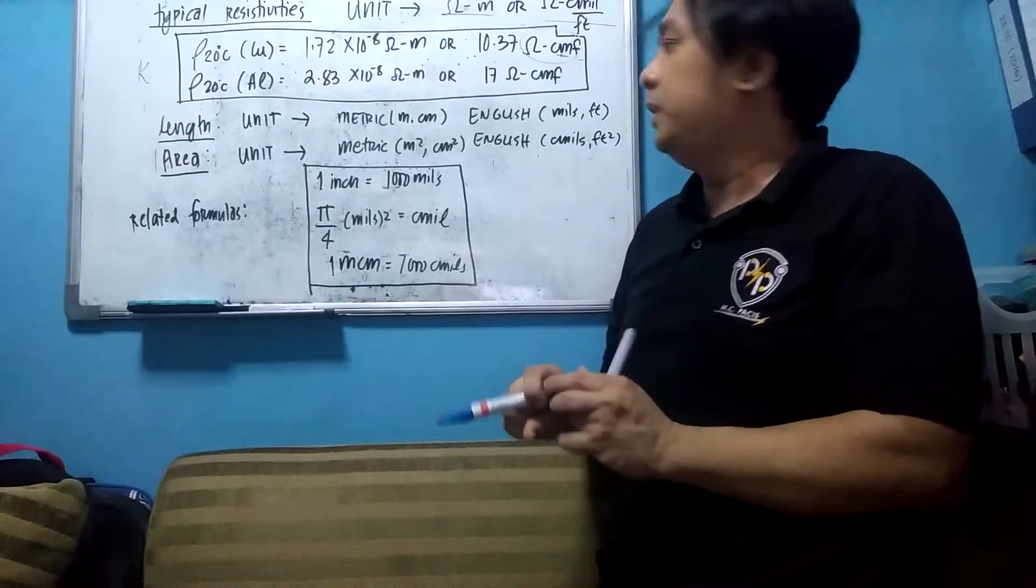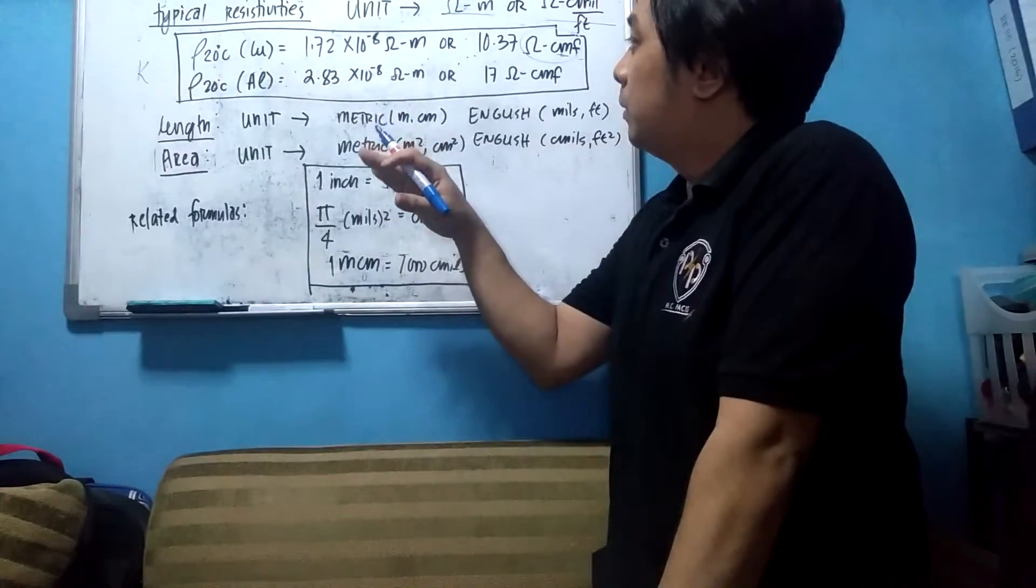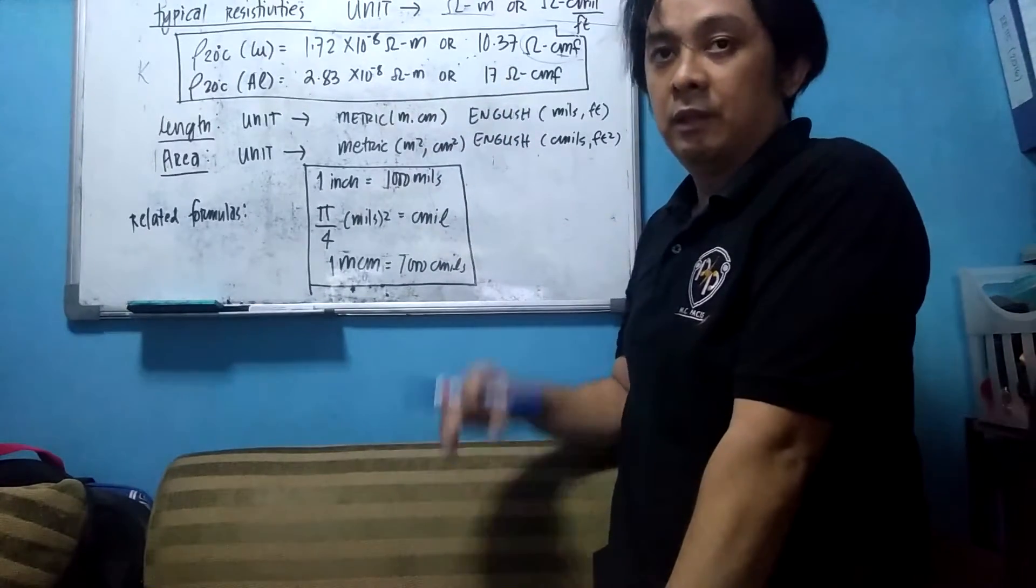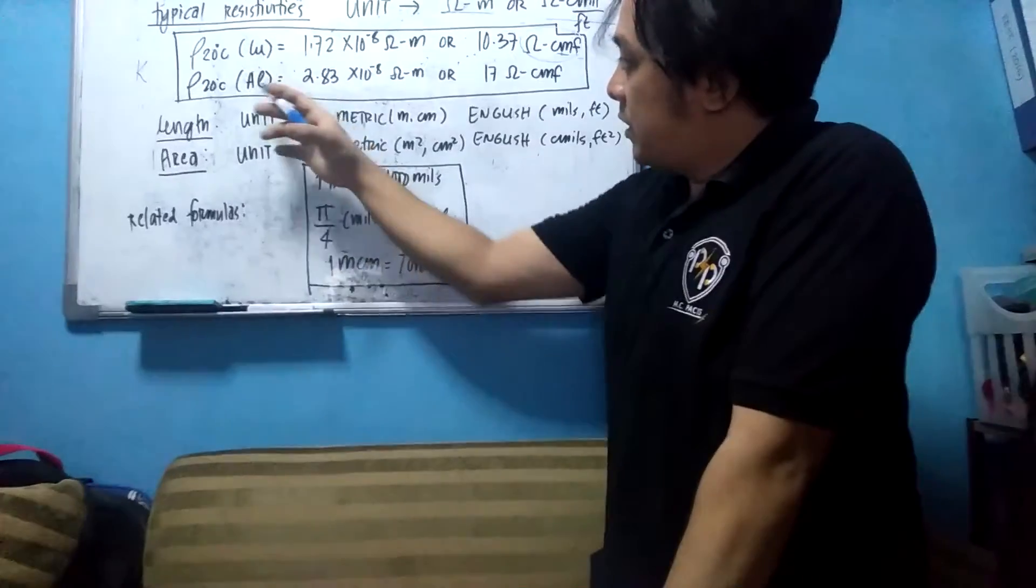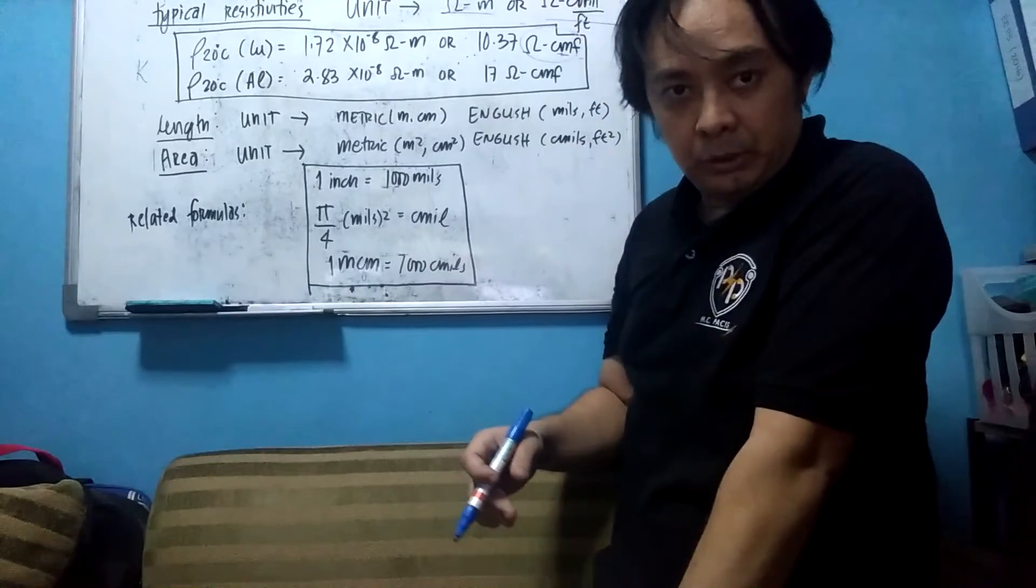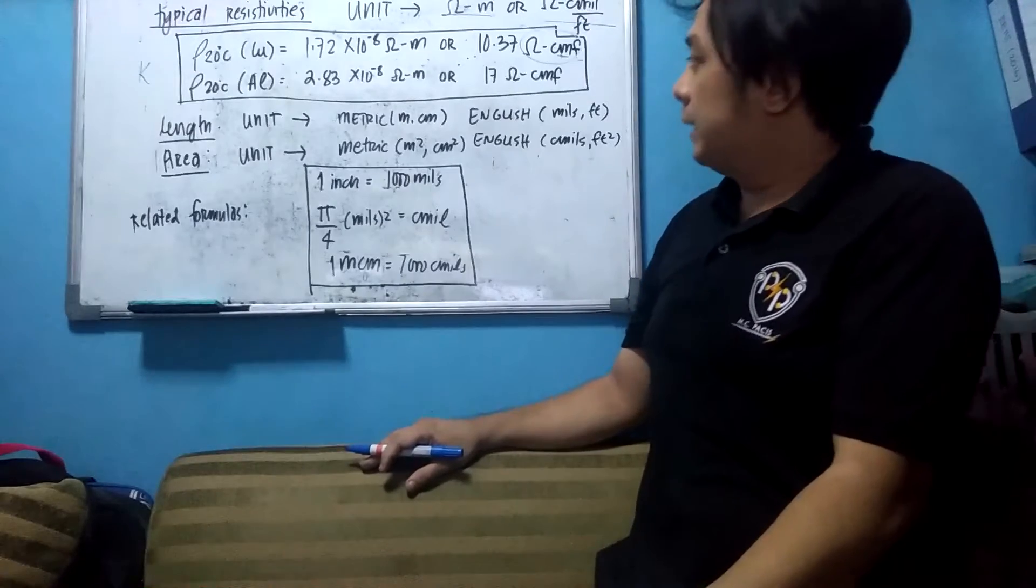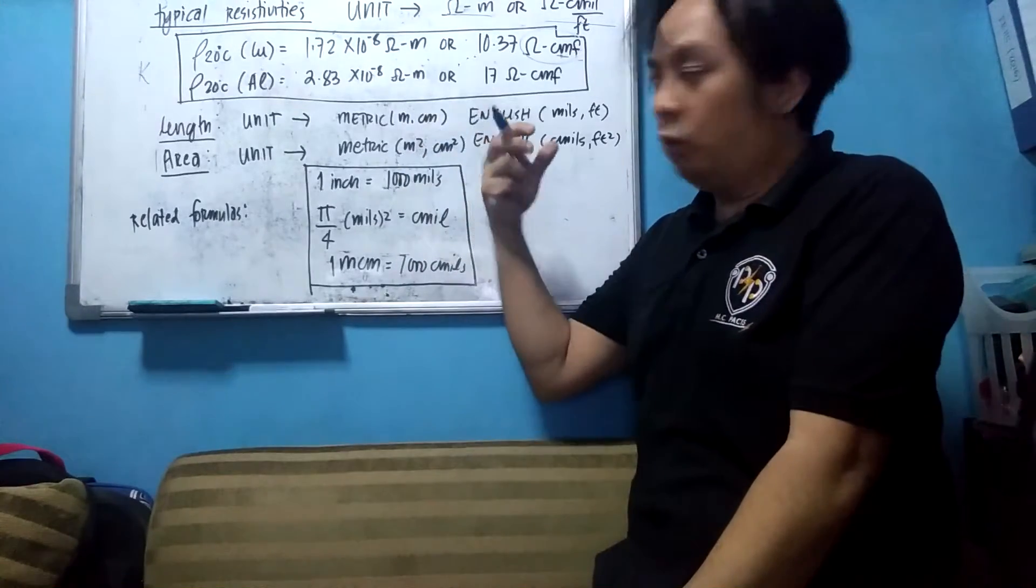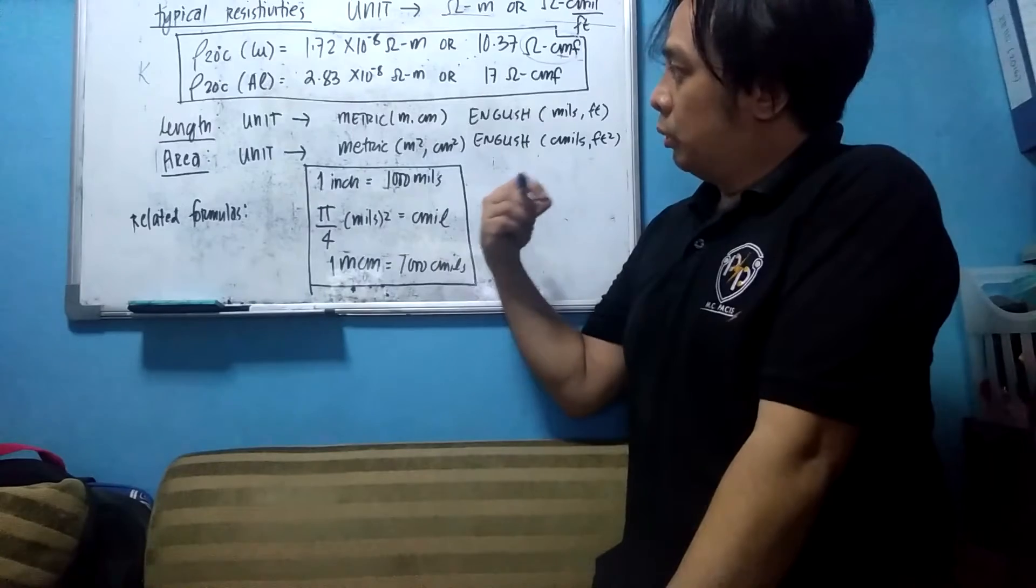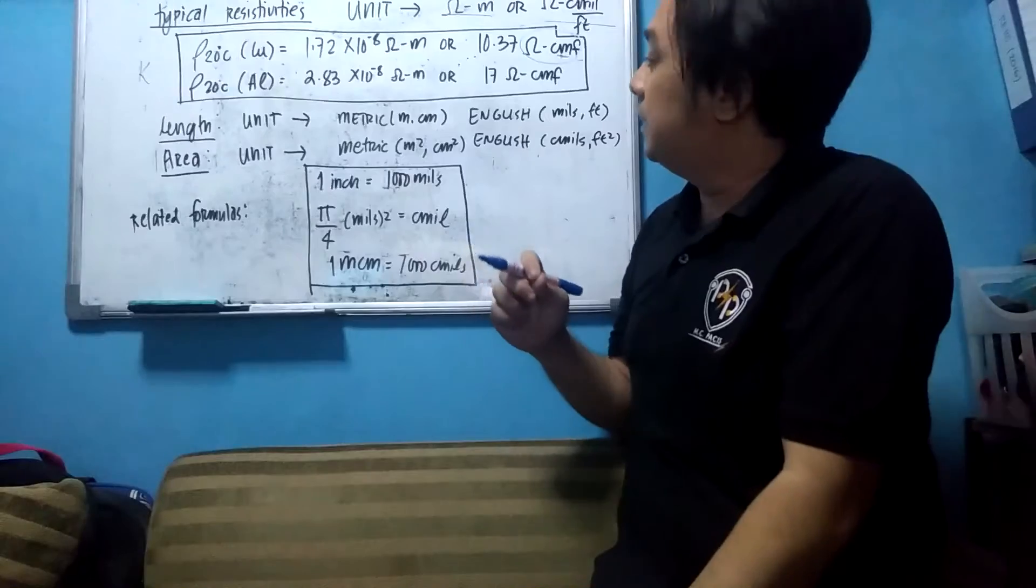When you say resistivity at 20 degrees centigrade of a copper that is 1.72 times 10 raised to negative 8 ohm meter or 10.37 ohm circular mill per feet. These are constants. So don't forget. Sometimes, on some problems, it does not indicate the resistivity. So you need to know the resistivity of a typical conductor especially copper or aluminum state.